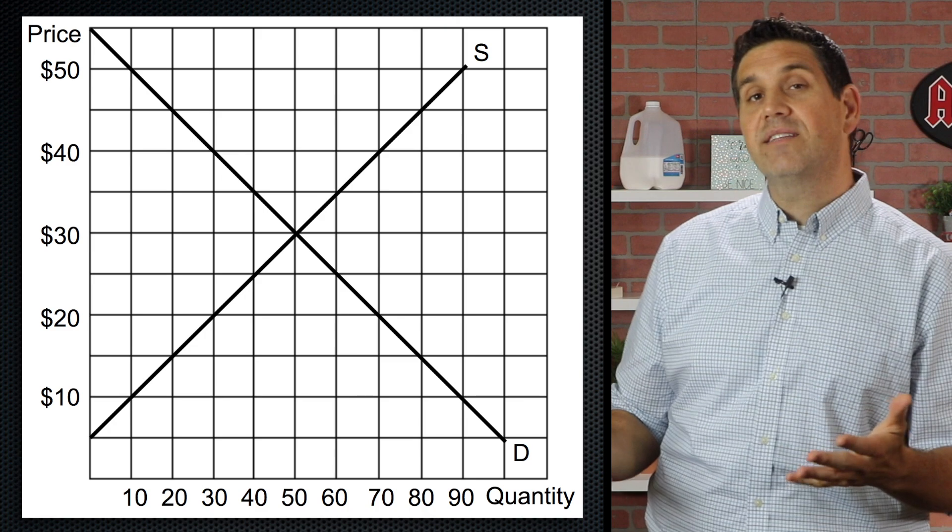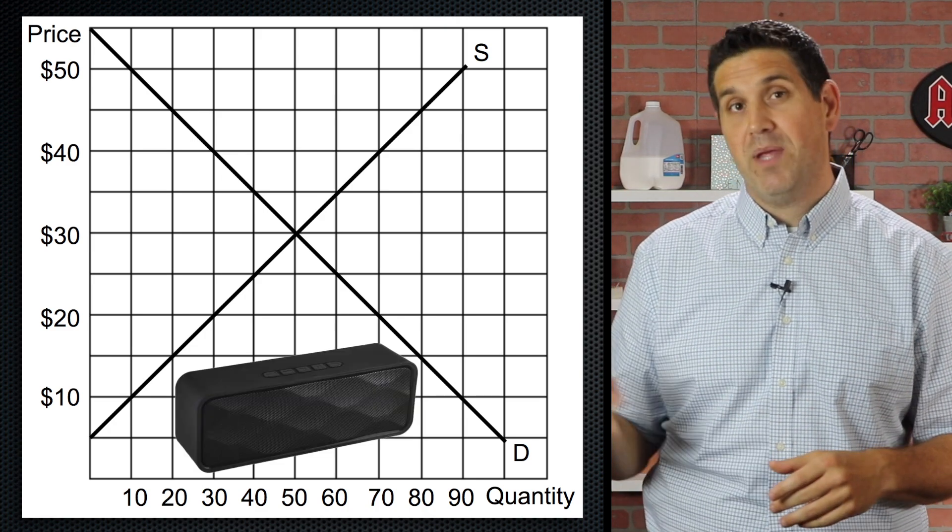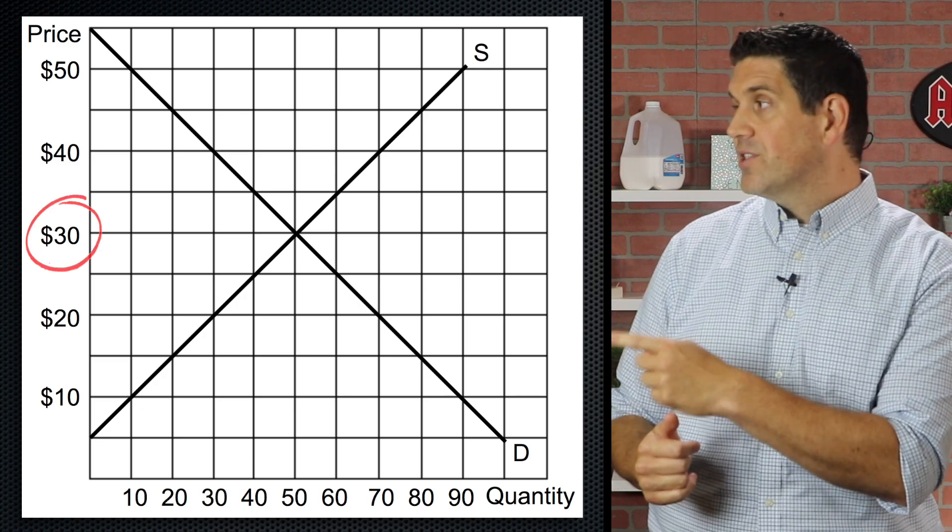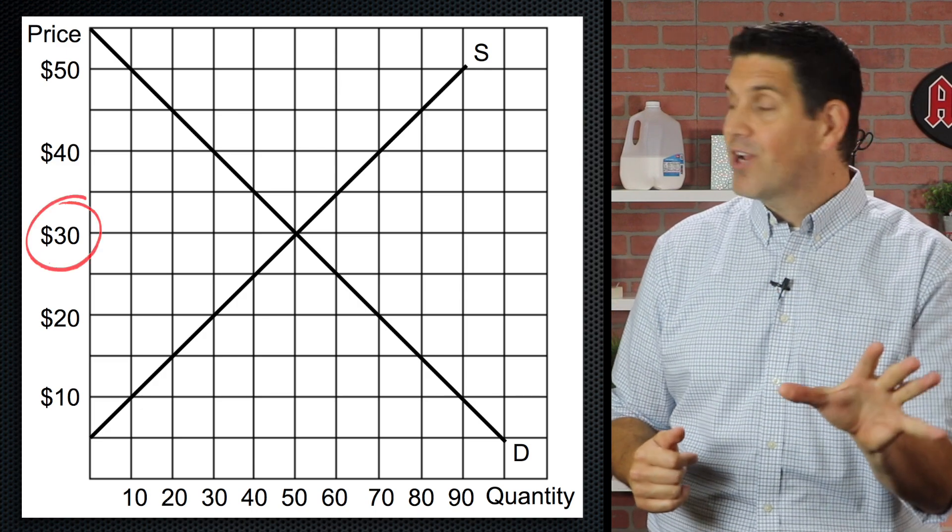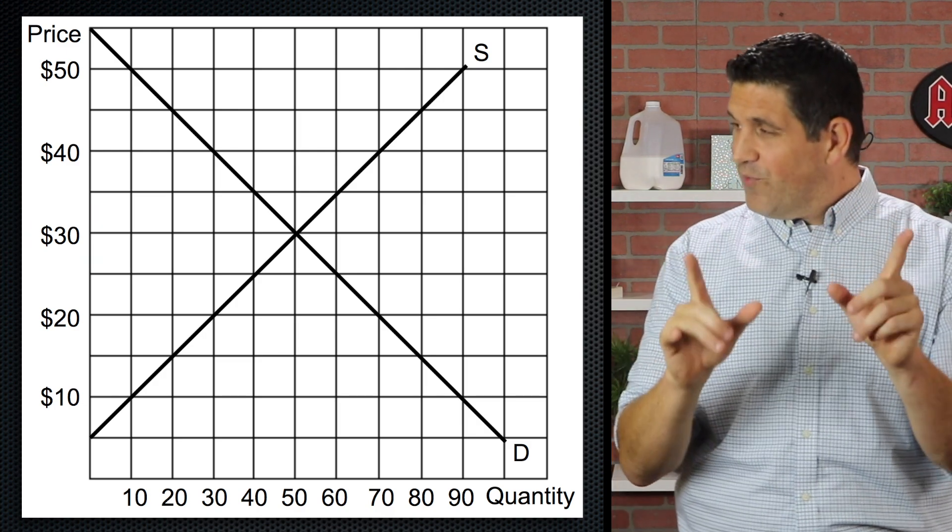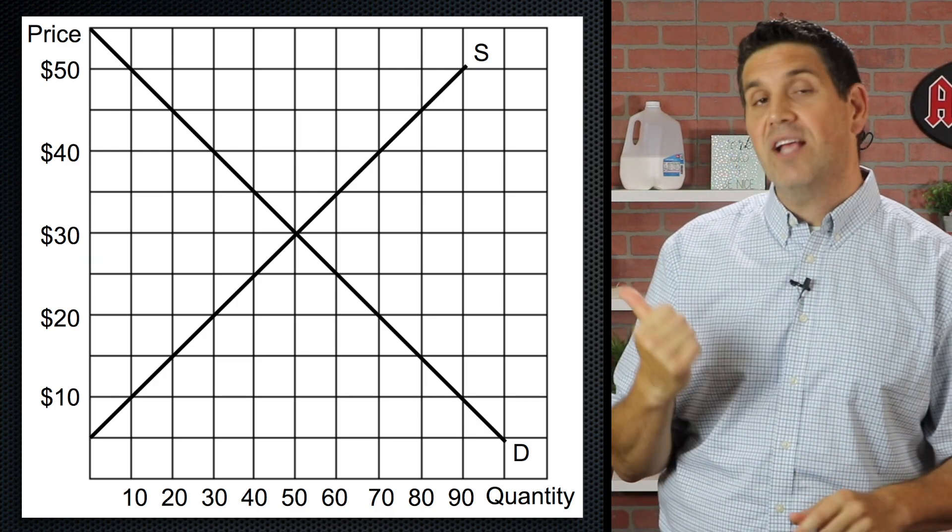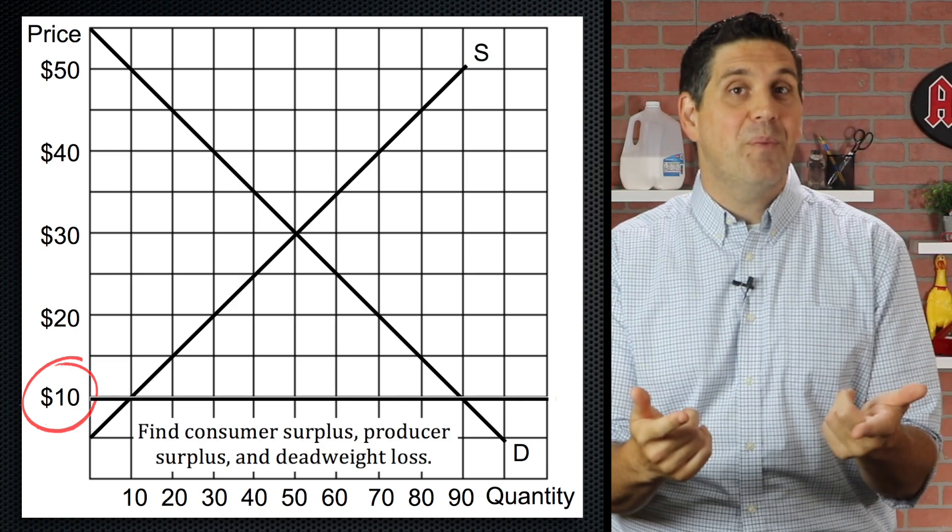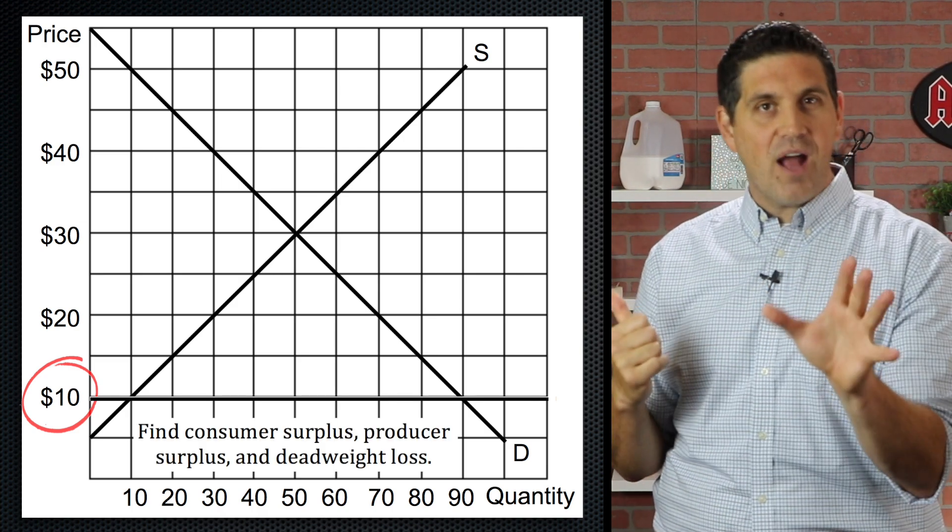So here's the graph and for this example, let's use portable Bluetooth speakers. This shows the domestic demand and supply and the equilibrium price at $30. This is the price if we produce these speakers in our own country. But what if we can get speakers at a lower price from other countries? Let's say $10 is the world price. Before I jump into it and show you what happens, try to figure it out for yourself.